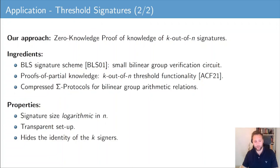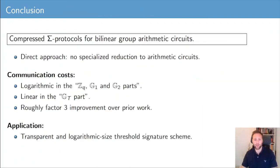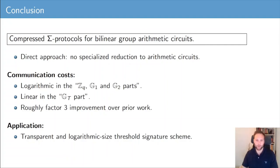This approach results in some nice properties. The size of the threshold signatures is logarithmic in N, and we do not require a trusted setup. In conclusion, we have generalized compressed sigma protocol theory to the bilinear group arithmetic circuit computation model. Our approach does not require a reduction to arithmetic circuits. The communication complexity of our protocols is logarithmic in the Zq, G1, and G2 parts and linear in the Gt parts of the bilinear group arithmetic circuits. We realize roughly a factor 3 improvement in communication costs over prior work, and as an application we construct a transparent and logarithmic-sized threshold signature scheme.